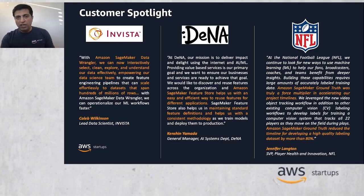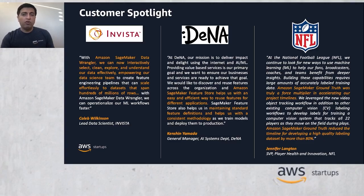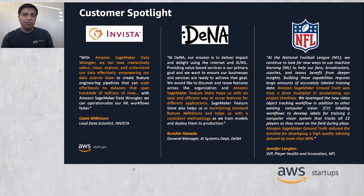The National Football League (NFL), a professional American football league in the United States — their SVP of Player Health and Innovation Jennifer Langton said that at NFL, building new capabilities requires a large amount of accurately labeled datasets. Amazon SageMaker Ground Truth was their force multiplier in accelerating their project timelines. Ground Truth reduced the timeline for developing a high-quality labeling dataset by more than 80%.